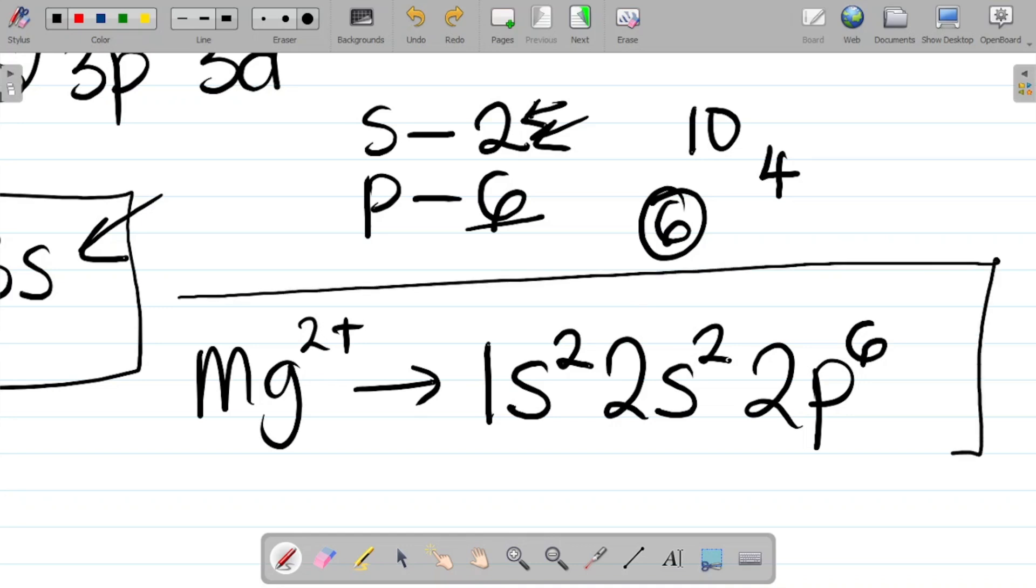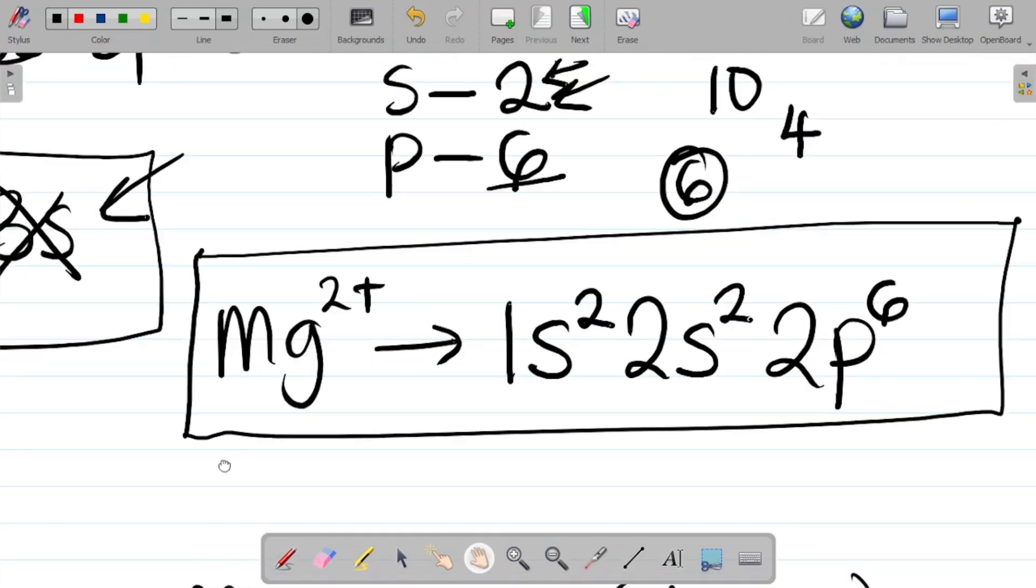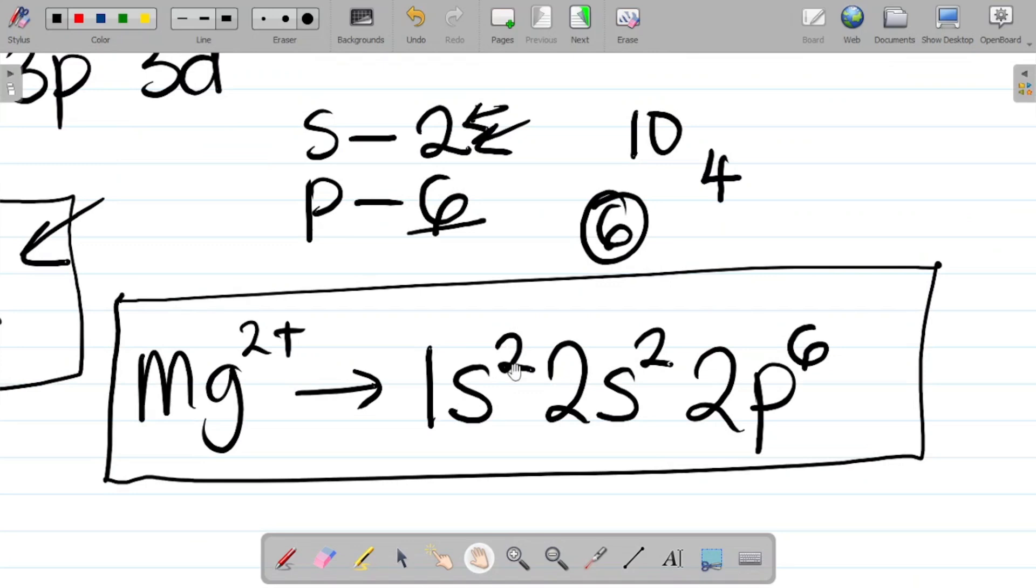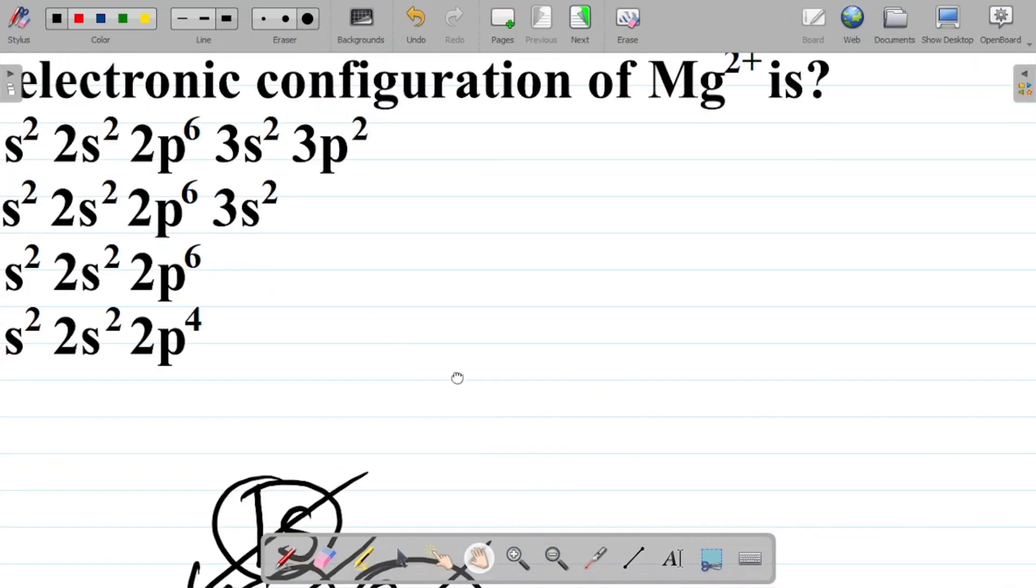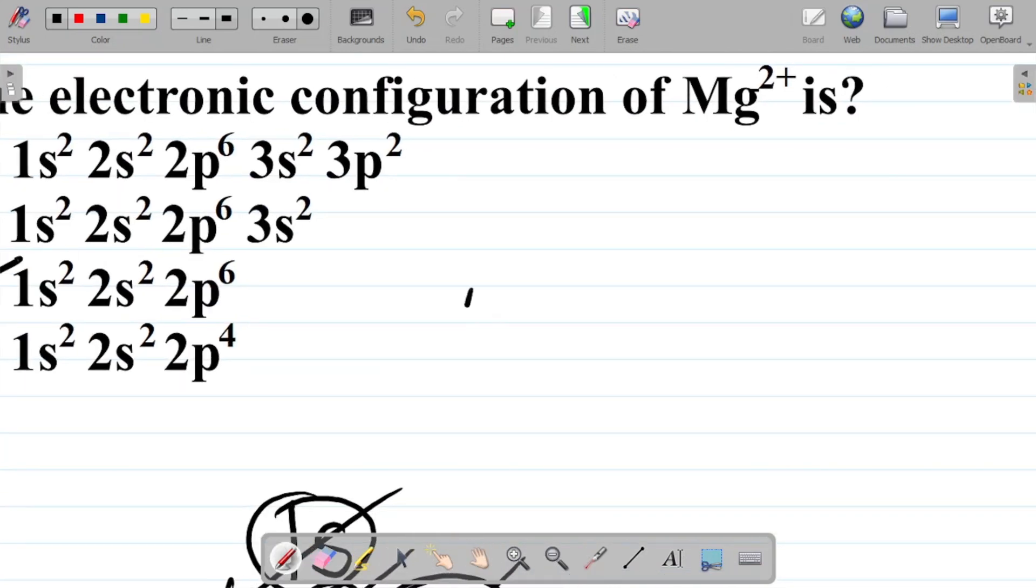Hence, this now becomes the SPDF configuration. That means we'll now ignore the next one, which is 3s. We'll ignore the 3s and just work with this. So my answer is 1s², 2s², 2p⁶. That becomes the answer to the question. That's option C. So the answer is option C.